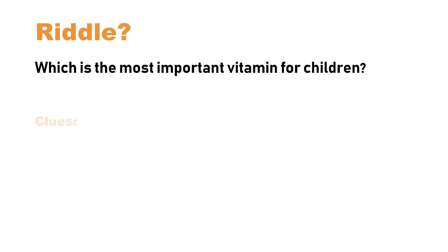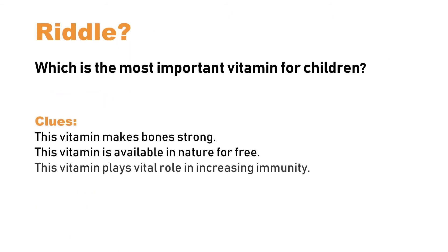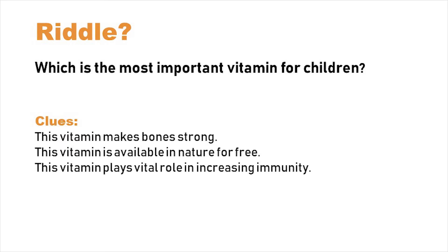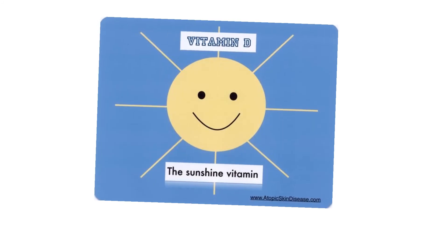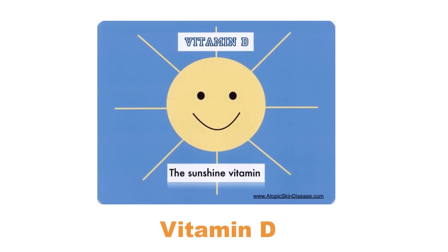There is one more vitamin which is very important and we all need. This is available freely in nature and makes our bones strong — can you guess which vitamin this is? Yes, this is Vitamin D, also called the sunshine vitamin. To get Vitamin D abundantly, all you need is to play on the ground and do exercises in the sun, or at least expose your face and hands for 20 minutes to sun rays. Vitamin D is also available in foods like egg yolk, butter and cheese, but you need to consume it moderately.